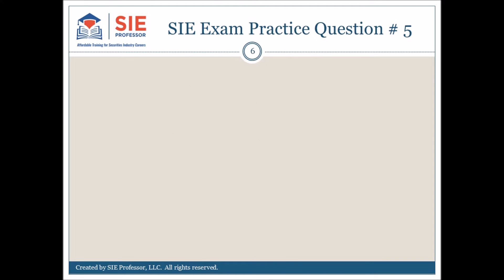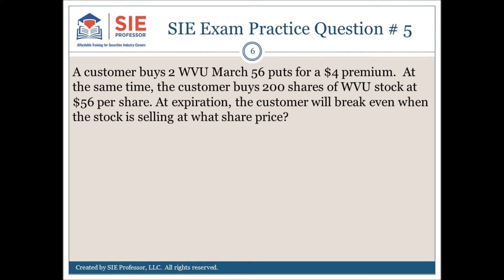SIE exam practice question number 5. A customer buys 2 WVU March 56 puts for a $4 premium. At the same time, the customer buys 200 shares of WVU stock at $56 per share. At expiration, the customer will break even when the stock is selling at what share price? $51, $52, $56, or $60? Pause here to consider your choices and mark your answer.